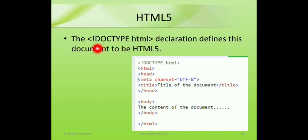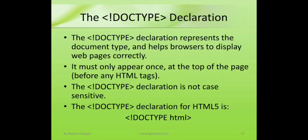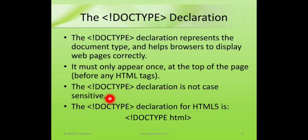In HTML5, you can see this structure — DOCTYPE is written at the top and the meta tag is there. The DOCTYPE HTML declaration defines the document to be HTML5. It is always written at the beginning. DOCTYPE declaration represents the document type and helps the browser to display web pages correctly. It must appear only once at the top of the page, before any HTML tags. The DOCTYPE declaration is not case sensitive — you can write it in small letters also.